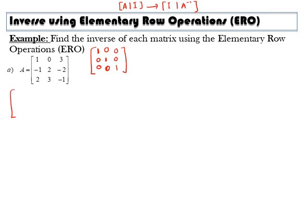Write the augmented matrix first: 1, 0, 3, negative 1, 2, negative 2, 2, 3, negative 1. And then the identity matrix: 1, 0, 0, 0, 1, 0, 0, 0, 1.